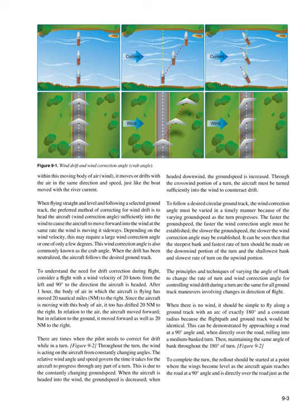There are times when the pilot needs to correct for drift while in a turn. Throughout the turn, the wind is acting on the aircraft from constantly changing angles. The relative wind angle and speed govern the time it takes for the aircraft to progress through any part of a turn, due to the constantly changing ground speed. When the aircraft is headed into the wind, the ground speed is decreased; when headed downwind, the ground speed is increased. Through the crosswind portion of a turn, the aircraft must be turned sufficiently into the wind to counteract drift. To follow a desired circular ground track, the wind correction angle must be varied in a timely manner because of the varying ground speed as the turn progresses. It can be seen that the steepest bank and fastest rate of turn should be made on the downwind portion of the turn, and the shallowest bank and slowest rate of turn on the upwind portion.